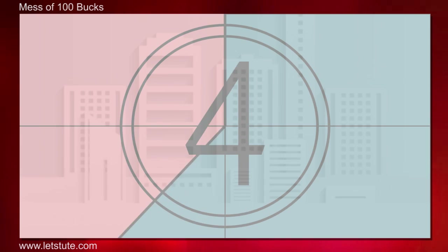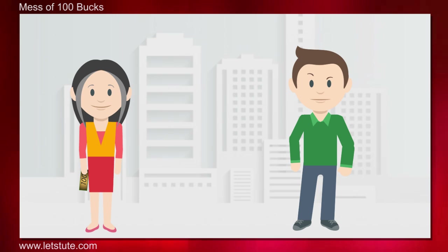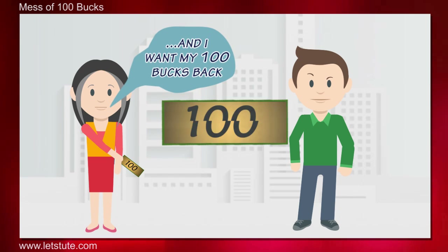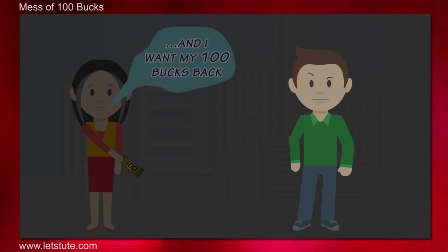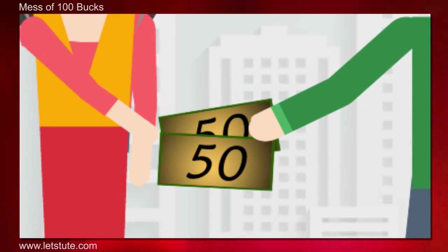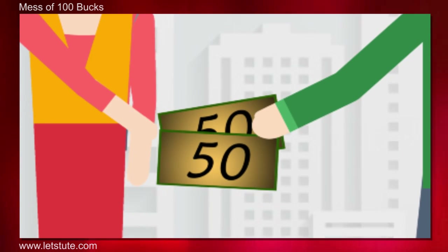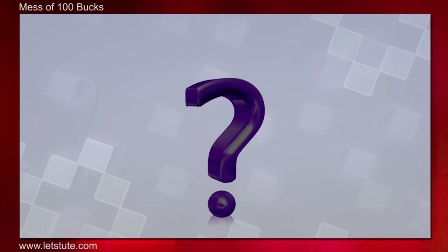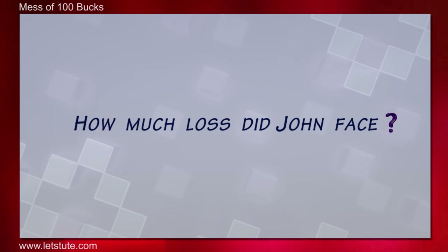The buyer took the cap and 50 bucks and went away. After some time, Jennifer came and said, 'John, the note is a fake one and I want my 100 bucks back.' John somehow arranged that money and gave it to Jennifer. But now the question is, how much loss did John face?